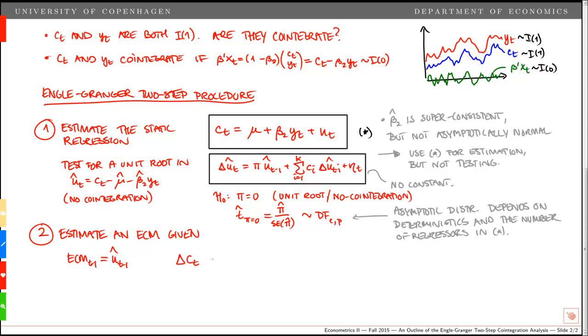We have delta ct on the left-hand side. On the right-hand side we have alpha multiplied by the ECM term last period, so note that it's t minus 1. Then we include a constant term delta, and include a number of lagged first differences of ct and yt. Here we could have a case where we only have lambda 1 delta ct minus 1, and then we have kappa 0 delta yt plus kappa 1 delta yt minus 1, and finally we have epsilon t, a residual.